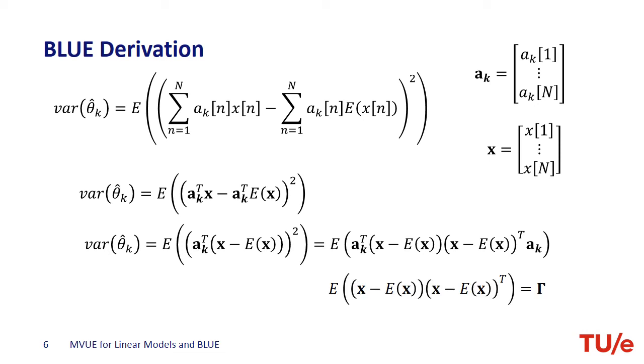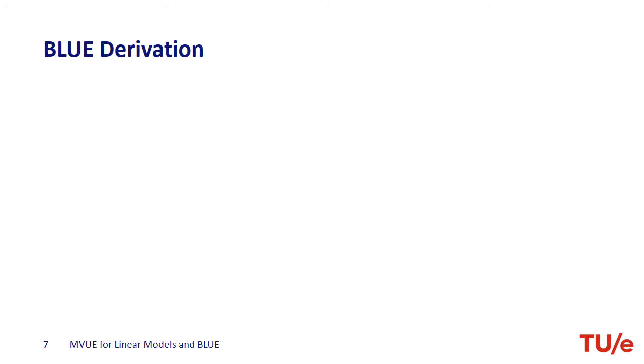We have to know the covariance of the data, which is in turn determined by the covariance of the noise. We still need to find the coefficients a_k to minimize this variance. What we haven't used so far is the signal model — in this sense, the results obtained so far are quite general. If you have an estimator that estimates parameters from linear operations on the data, the variance of the estimation is determined by the coefficients of the linear estimator and the data covariance. To minimize the estimation variance we need more information — those coefficients of the estimator have to be based on something, and that is the signal model.